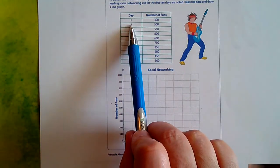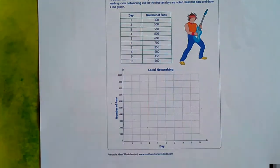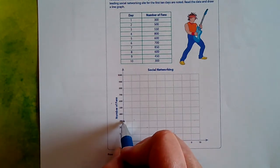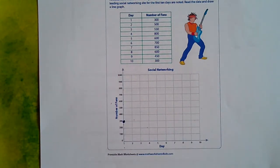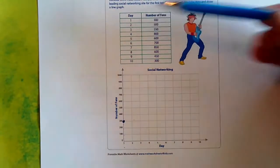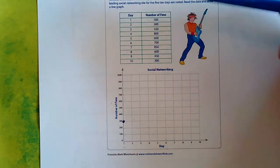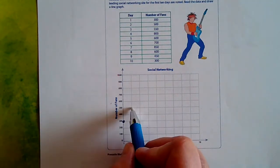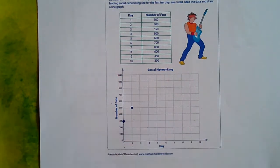All right. So on day one, Jim had 300 fans. So we have to find day one, which is right here, and climb the ladder until we get to 300. Then we're going to put a dot right on that line. On day two, Jim had 500 fans. So we're going to go to day two, and we're going to go up, draw a point on 500.